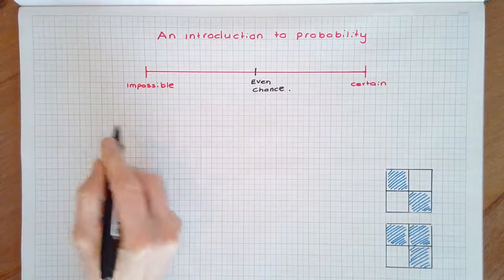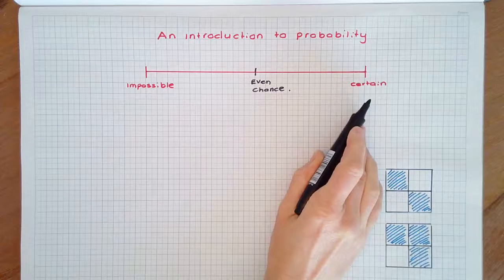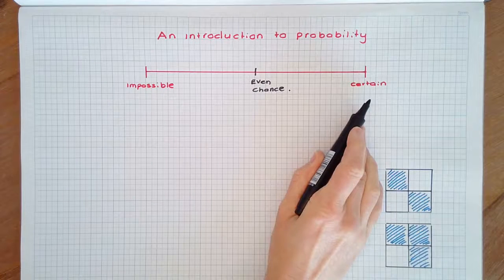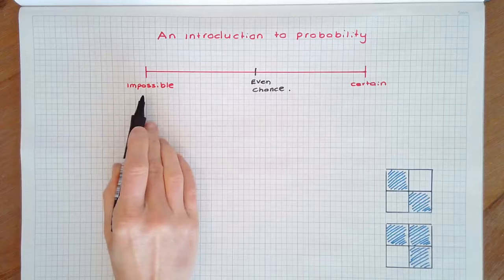The more likely an event is to occur, the further to the right it will be, and the less likely an event to occur, the further to the left it will be.